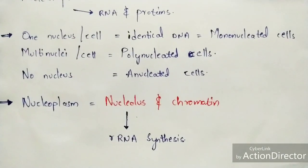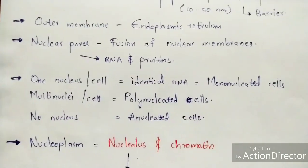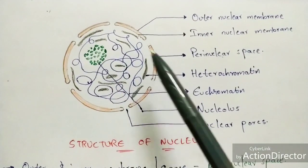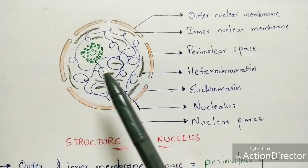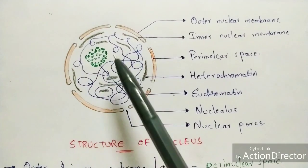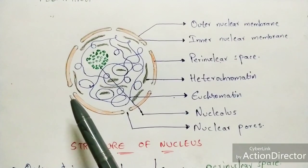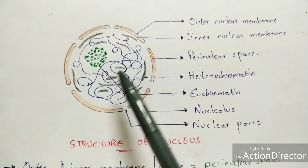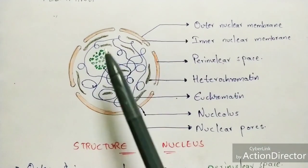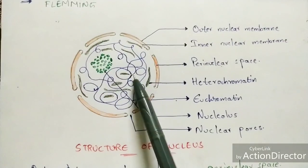Nucleoplasm is the cytoplasm of the nucleus — the equivalent of cytoplasm in the cell. Inside the nucleoplasm, there is the presence of nucleolus as well as chromatin fibers.